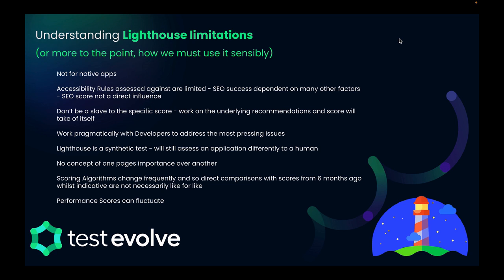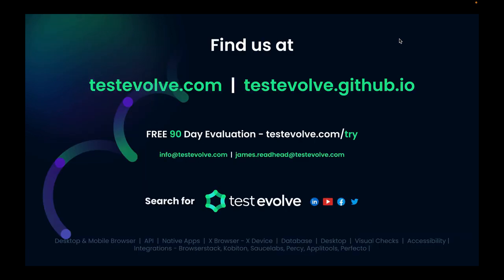Finally, scoring algorithms will change over time. The run history and trend in Halo is incredibly useful as a picture of health — to see if your scores are generally improving and you're trending in the right direction — but bear in mind that an assessment from six months ago is not a like-for-like comparison with an assessment now, because both the algorithms and your application will have changed. That doesn't diminish the value of looking at the trend. The majority of these perceived limitations are really around our use of Lighthouse as a tool, not the information it's returning to us.